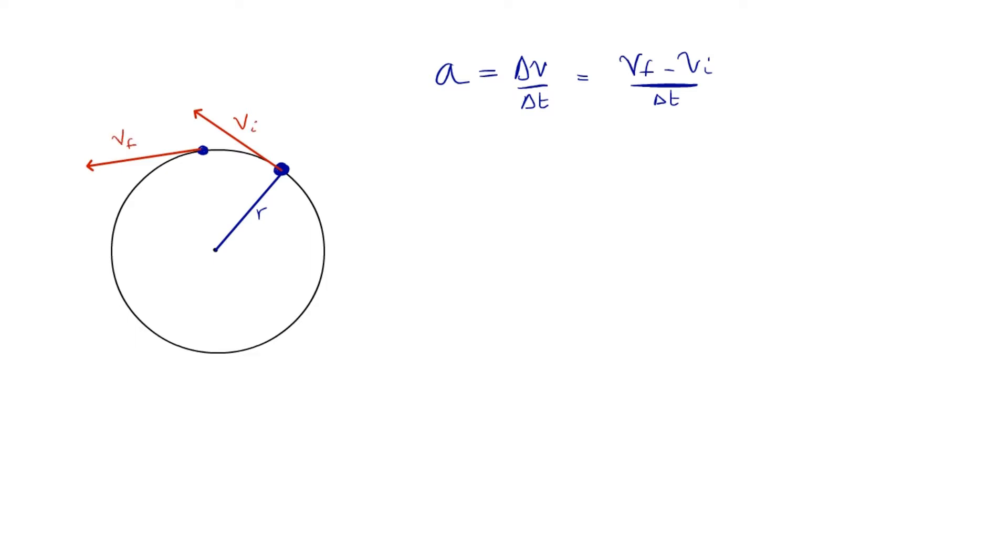So this is my final. This is my initial. But of course, remember, the magnitude, v final, is equal to v initial because the speed remains the same. I'm going to put my other radius on so that we can see exactly what's happened there.